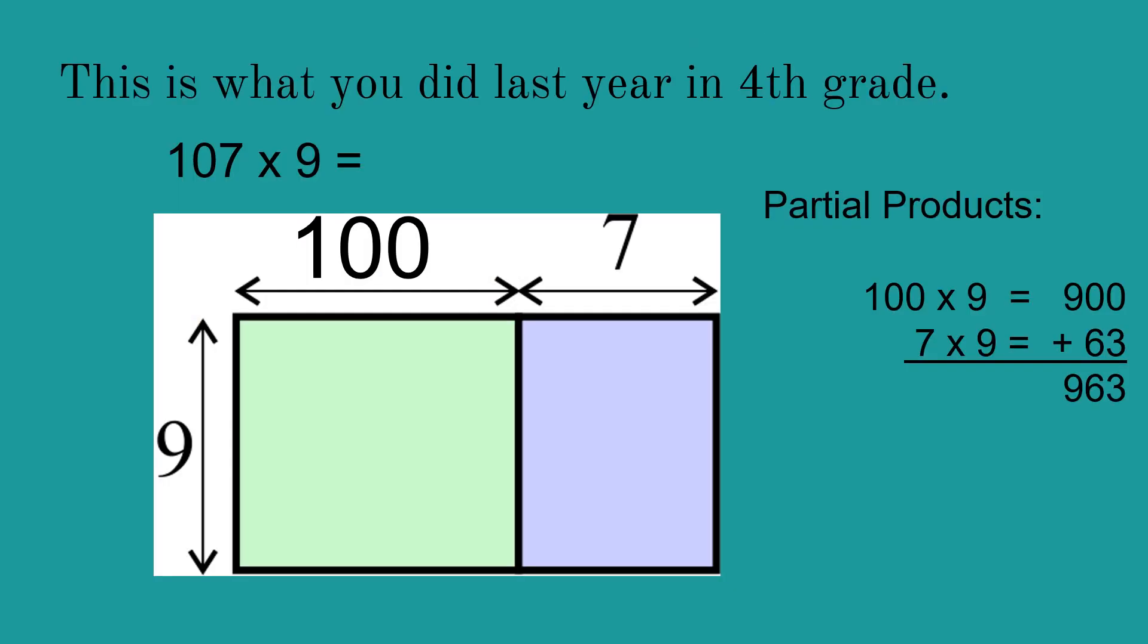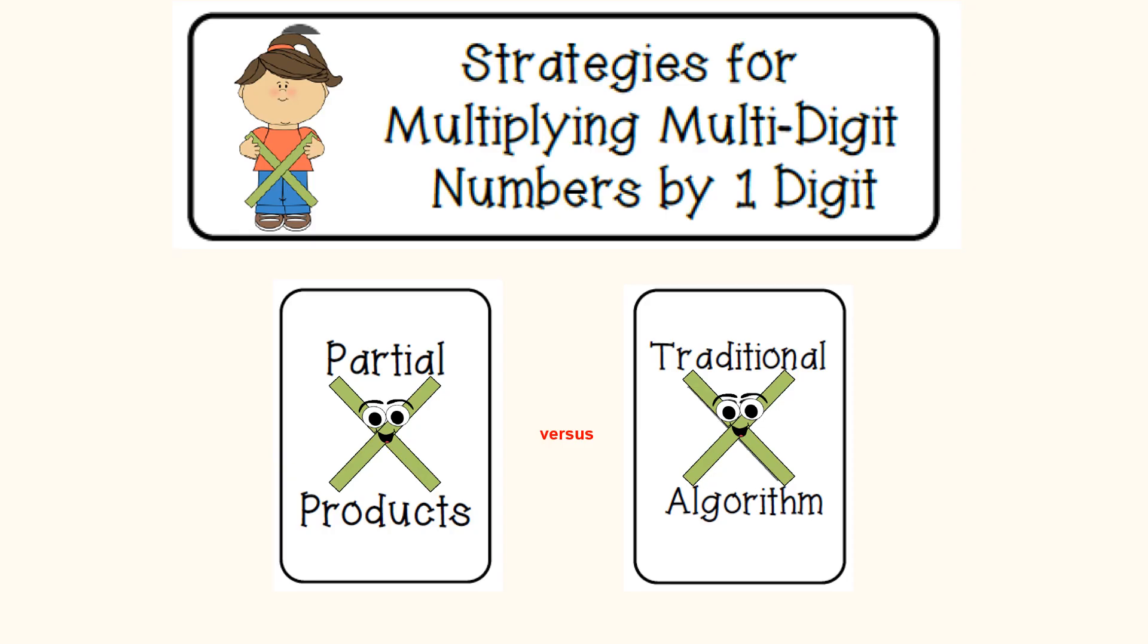So this is what you did last year in fourth grade. You talked about something called partial products. That means if you had the factor 107 times 9, what that means is 100 times 9 and 7 times 9 would give me 900, and 7 times 9 would give me 63. And if I put those two together, we get 963. That is partial products.